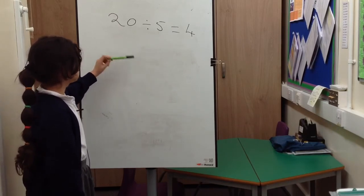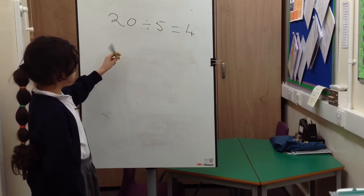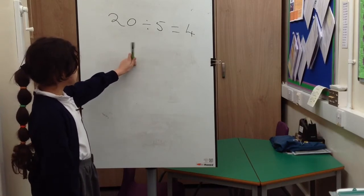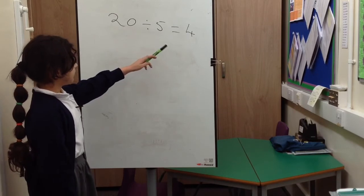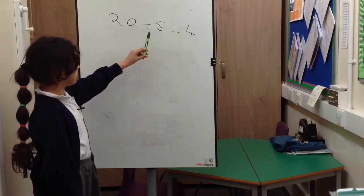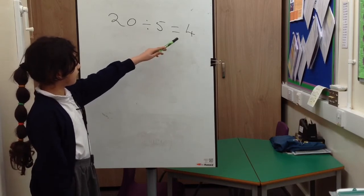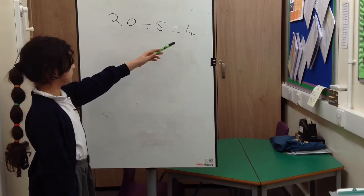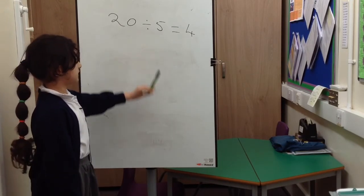So we know that timesing is the opposite of dividing and we can use the inverse. So the times calculation would be 4 times 5, because 4 is what the dividing will be the answer, and this is the times tables we're doing it in.